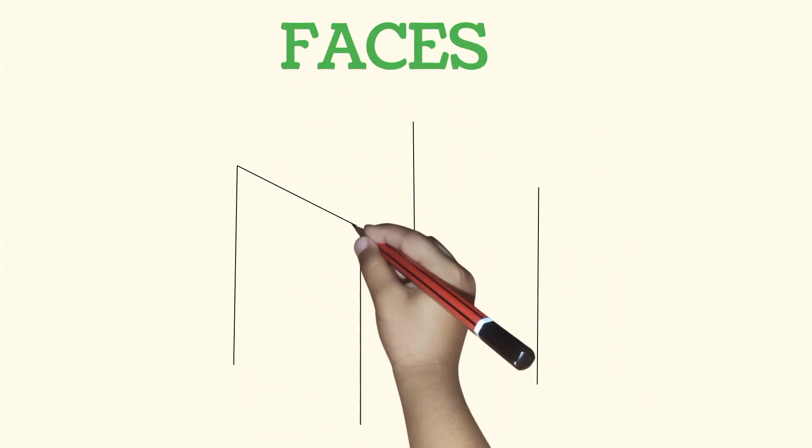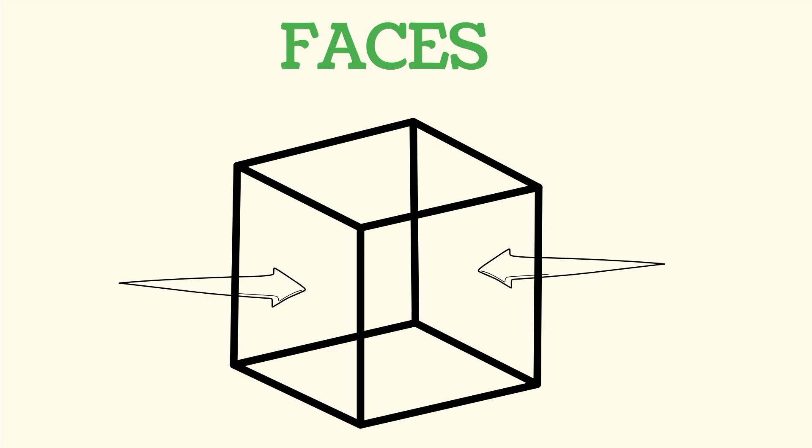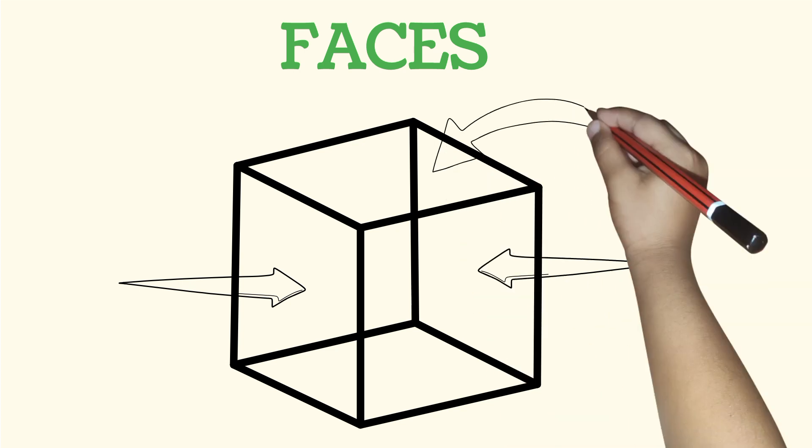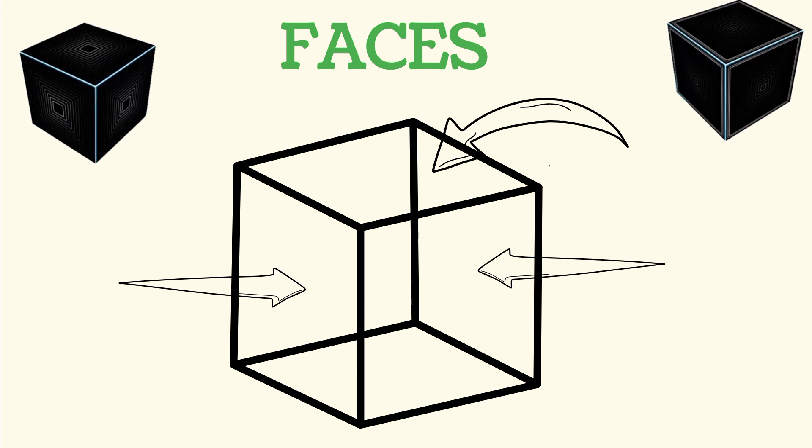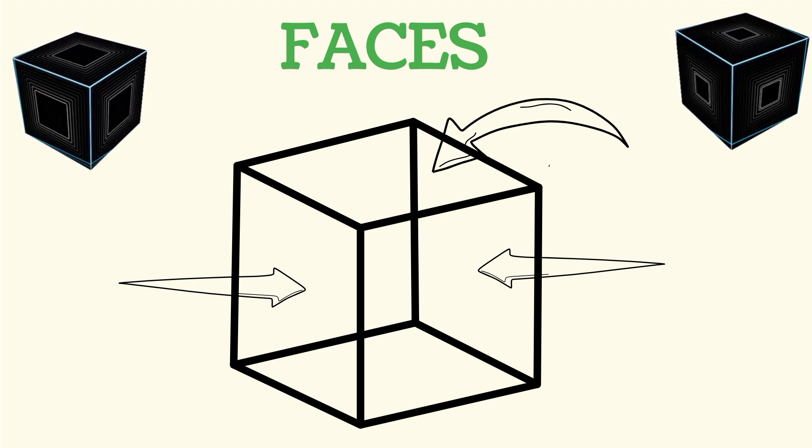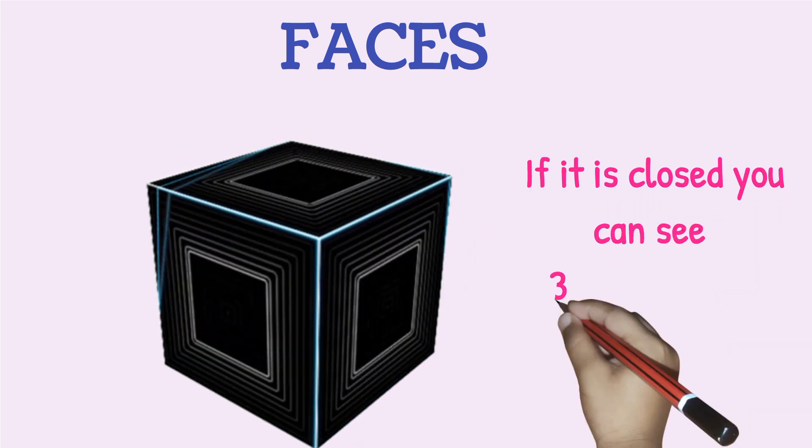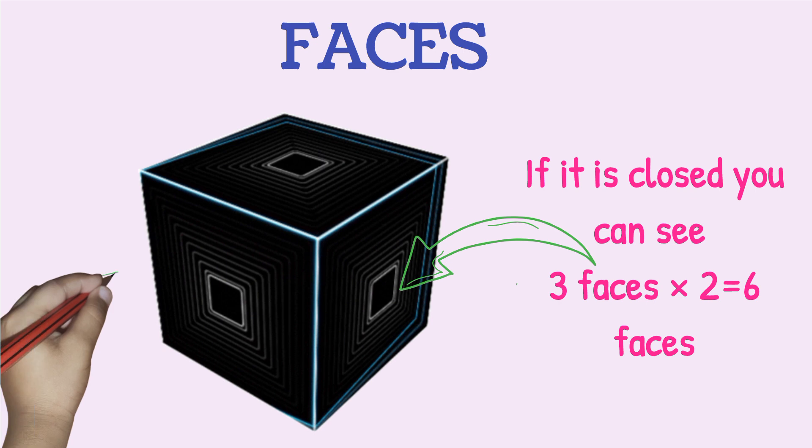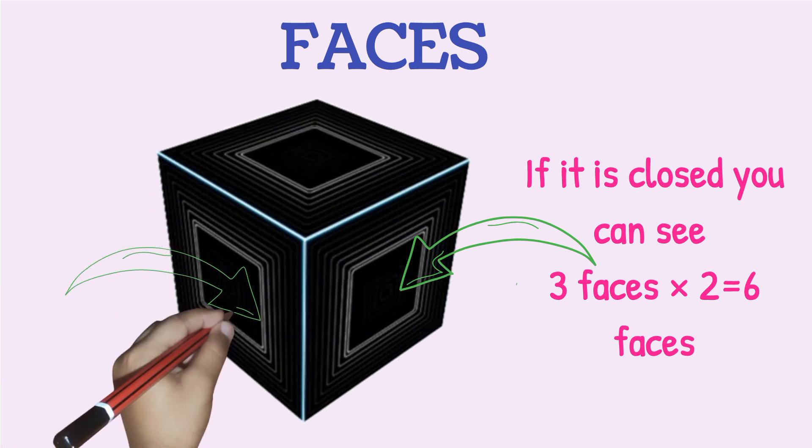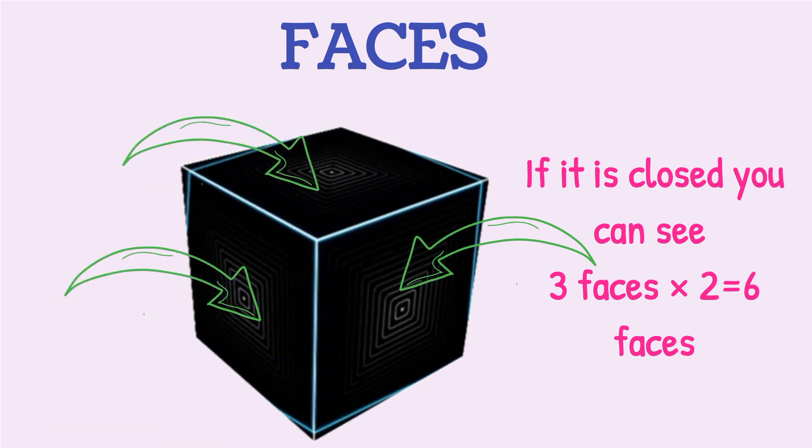Let's go to the faces. We are given a solid like this, which is closed both sides. This is a face and we have another one. Another one here and another one at the top and the bottom. So we can see 3, but we have the opposite sides. So we can just model it by 2. So faces, if it is closed, you can see 3 faces. But we model them by 2 because each has the other side also. So we have 6 faces.